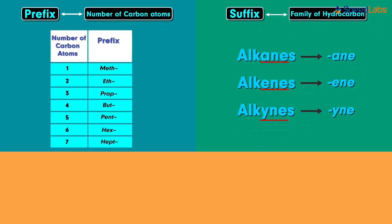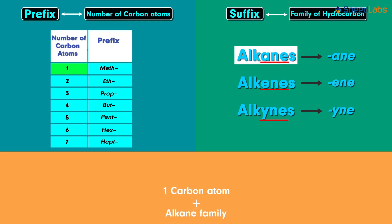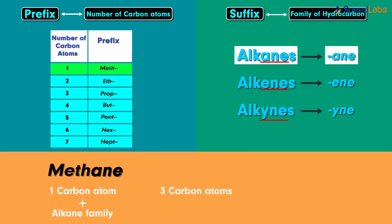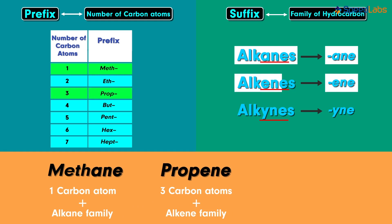Let's try the example of a compound with one carbon atom belonging to the alkane family. 'Meth' represents one carbon and '-ane' represents alkanes, giving us the name methane. For a compound with three carbon atoms belonging to the alkene group, 'prop' combined with '-ene' gives us propene.